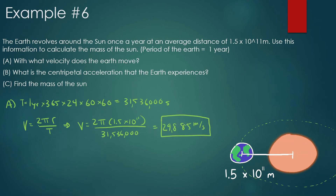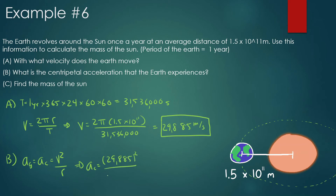Next, we find the centripetal acceleration the Earth experiences. Centripetal acceleration equals v squared over r, so that's 29,885 squared divided by 1.5 times 10 to the 11. We get 0.006 meters per second squared — a very small number because the Earth is so far from the Sun.